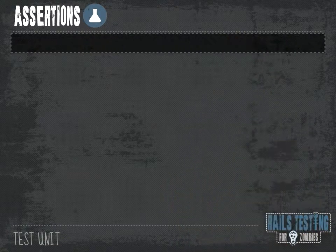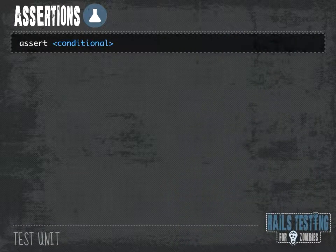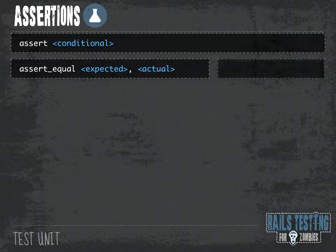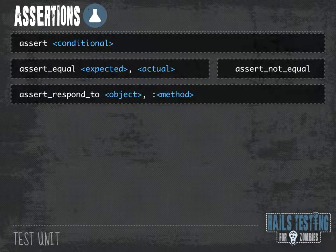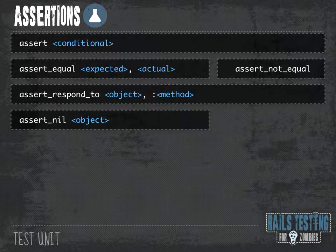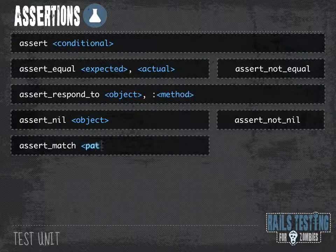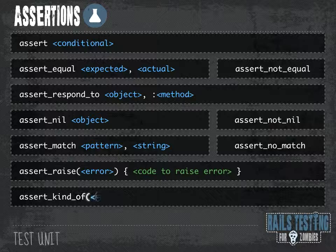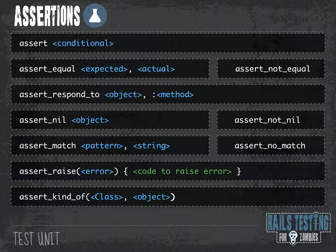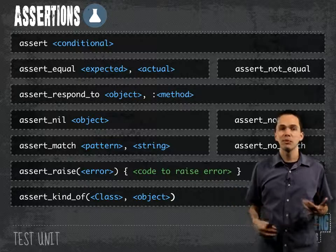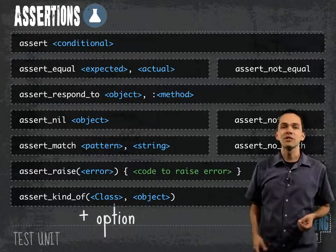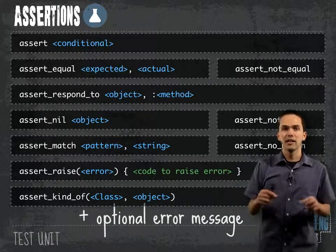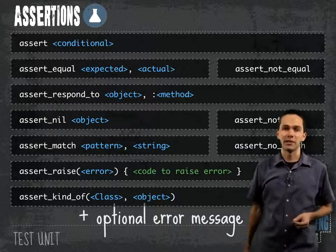Test unit comes with a bunch of different assertions. We have: assert, which looks for a conditional; assert_equal; assert_not_equal; assert_respond_to; assert_nil; assert_not_nil; assert_match; assert_no_match; assert_raises; and assert_kind_of, if you want to make sure an object is a certain class. If you need the error message for each of these to be more specific, they can all take an additional parameter which is a string, and you can type in exactly what you want the error message to be.